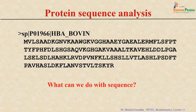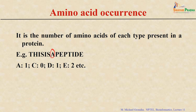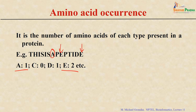One of the easiest parameters you can calculate from an amino acid sequence is the frequency of occurrence — simply counting how many times each amino acid appears. For example, in a peptide, you can count how many times A appears (once), how many times E appears (twice), and so on. For any given sequence you can get these numbers and see whether they resemble anything meaningful.